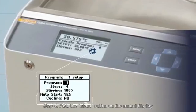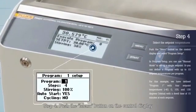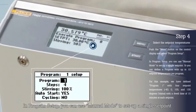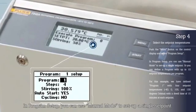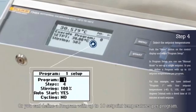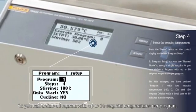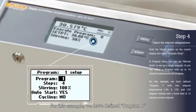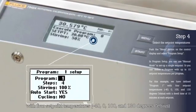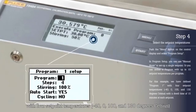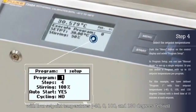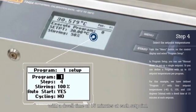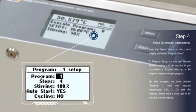Step 4: Push the menu button on the control display and select Program Setup. In Program Setup, you can use manual mode to set up a single set point, or you can define a program with up to 10 set point temperatures per program. For this example, we have defined Program 1 with 4 set point temperatures: minus 40, 0, 100 and 130 degrees Celsius with a dwell time of 15 minutes at each set point.